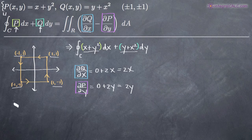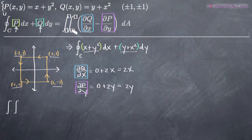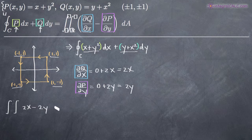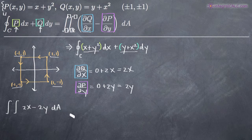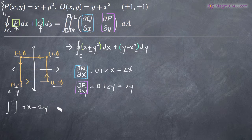Let's take a look at what that looks like. We'll have the double integral — I'm going to leave a little room for our limits of integration, upper and lower, for both integrals. Then we have the partial derivative of Q with respect to x, which is 2x, minus the partial derivative of P with respect to y, which is 2y. For these double integrals, we always integrate first with respect to y and then with respect to x, so the dA becomes dy dx.